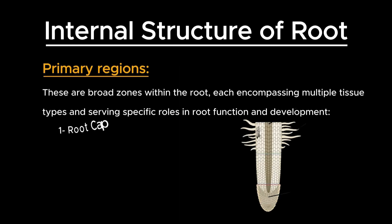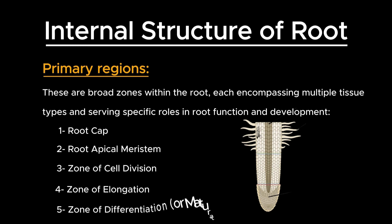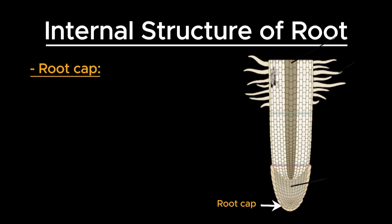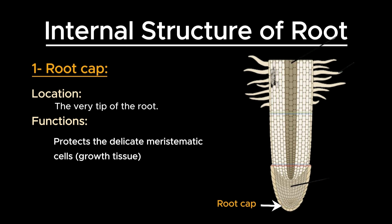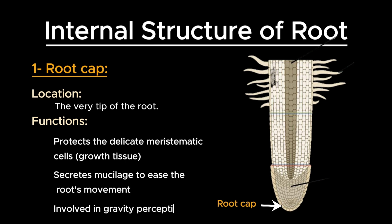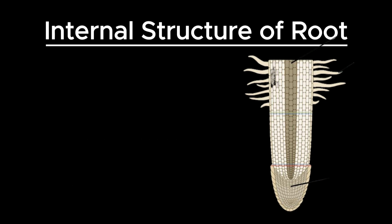Let's focus on the primary regions, where five regions are typically found in a root. The first one is the root cap. The root cap is the very tip of the root. It protects the delicate meristematic cells behind it as the root pushes through the soil. It also secretes mucilage to ease the root's movement through the soil and is involved in gravity perception.